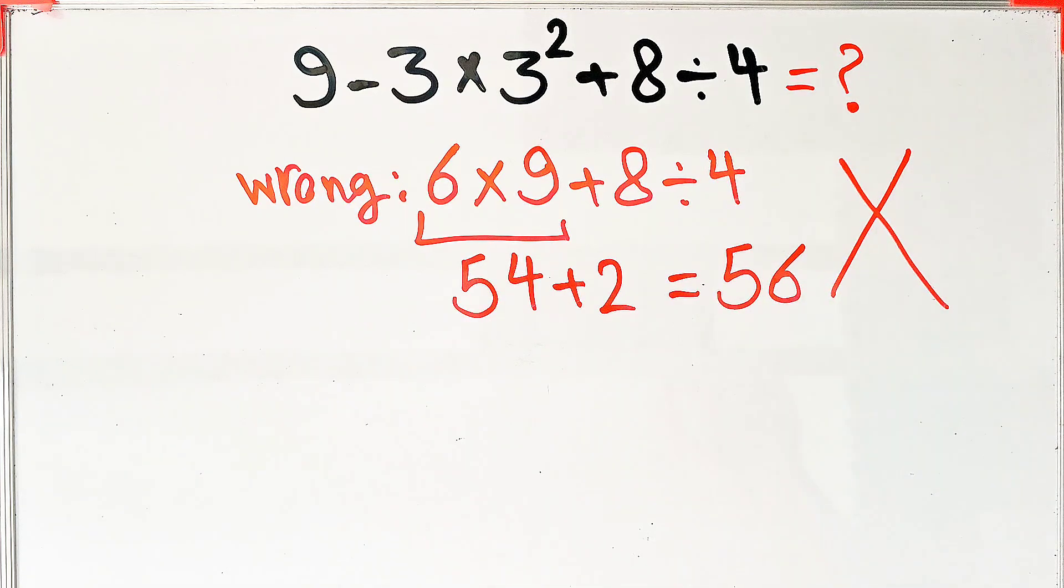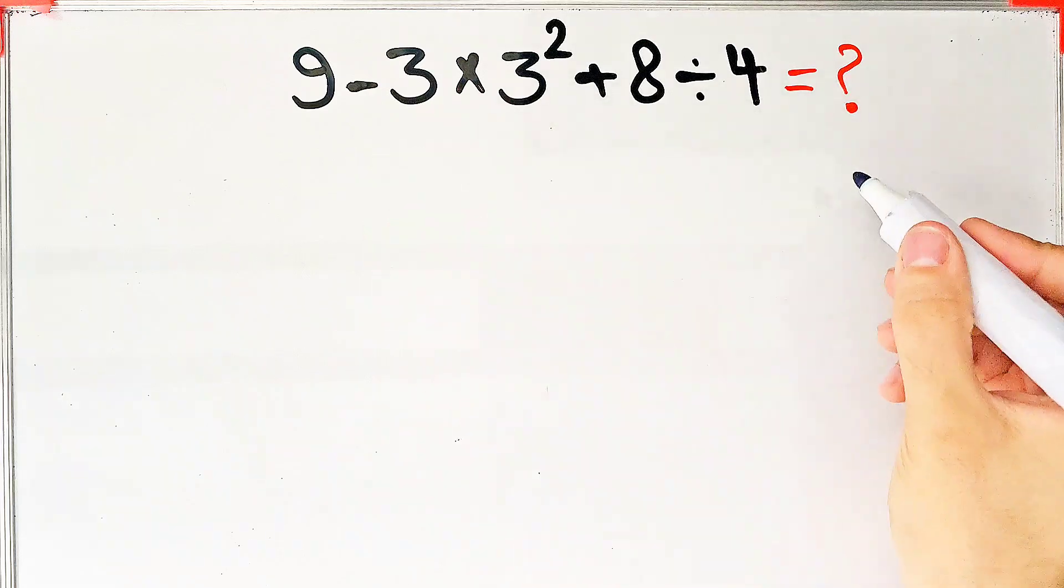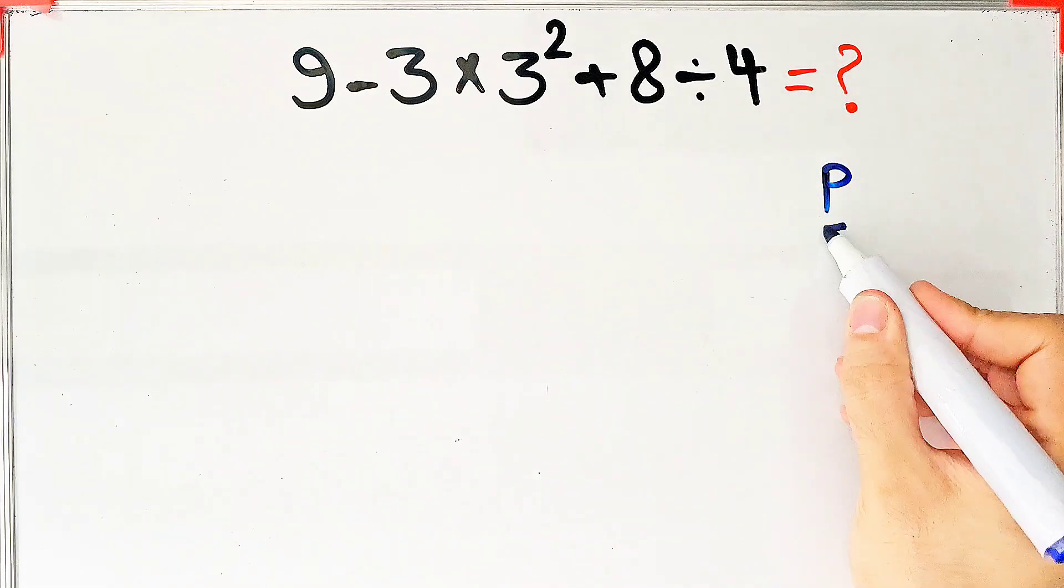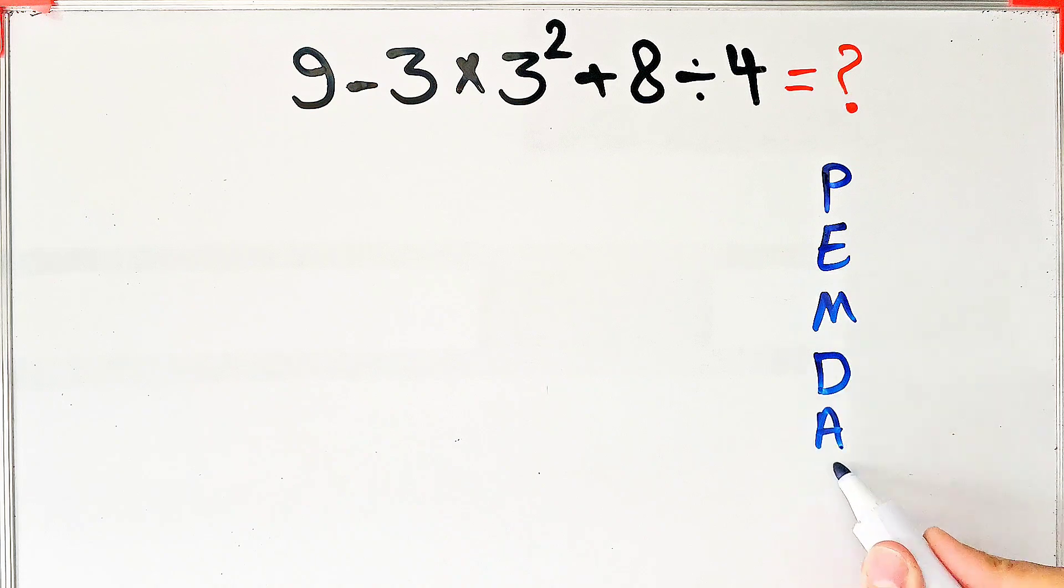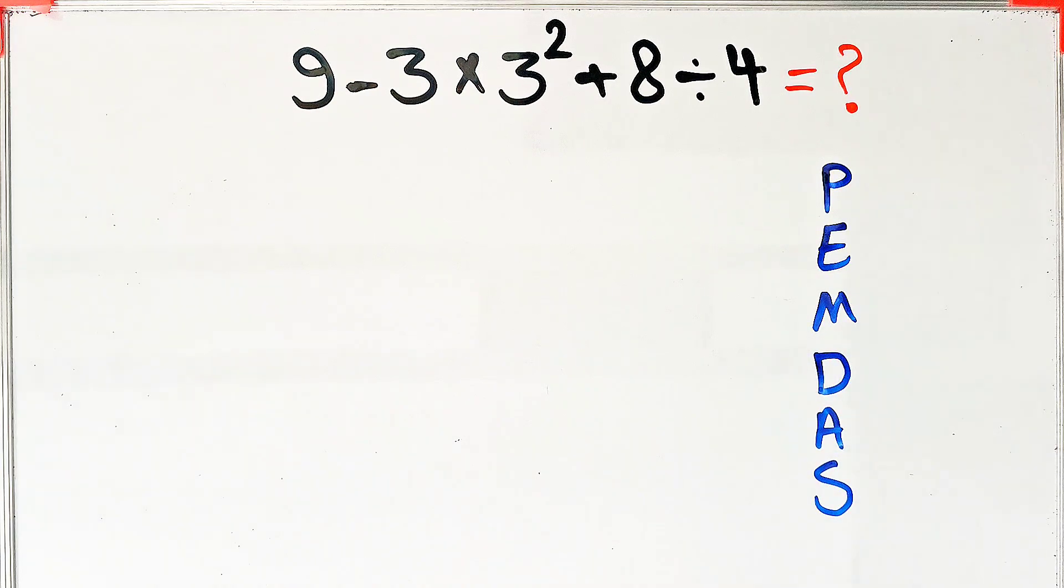Let's solve this question step by step together. To solve this question, we need to follow the PEMDAS rule that shows the priority of the mathematical operations. If you don't pay attention to this rule, you get the wrong answer.